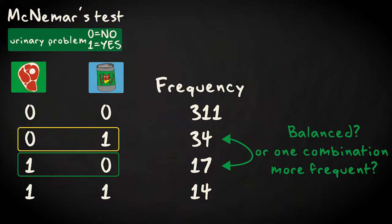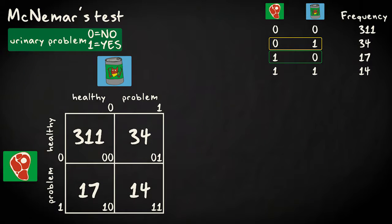To make it easier, we put the combinations in a two-by-two table with healthy and problem cats on a raw diet in the rows, and healthy and problem cats on canned food in the columns.